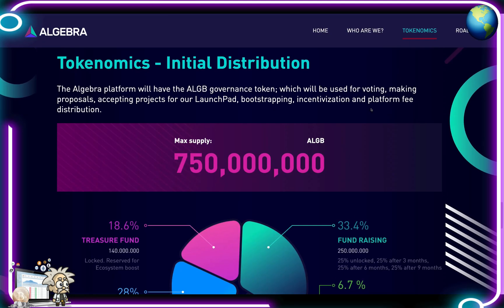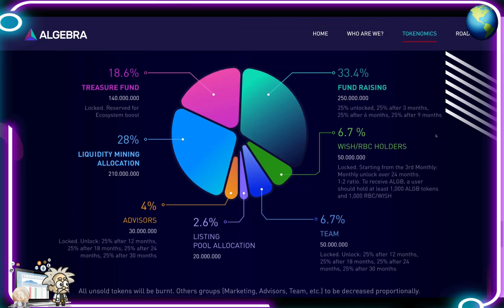Tokenomics: the Algebra platform will have the ALGB governance token, used for voting, making proposals, accepting projects for their launchpad, bootstrapping incentivization, and platform fee distribution. Max supply is 750 million ALGB. The treasury fund has an 18.6% allocation - 140 million tokens locked and reserved for ecosystem boost. Liquidity mining is 28% allocation at 210 million. Advisors get 30 million, unlocked 25% after 12 months, 25% after 18 months, 25% after 24 months, and 25% after 30 months.